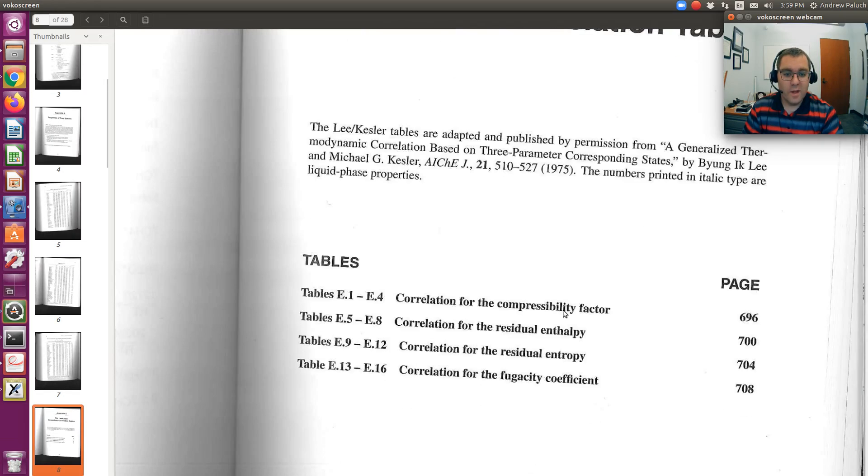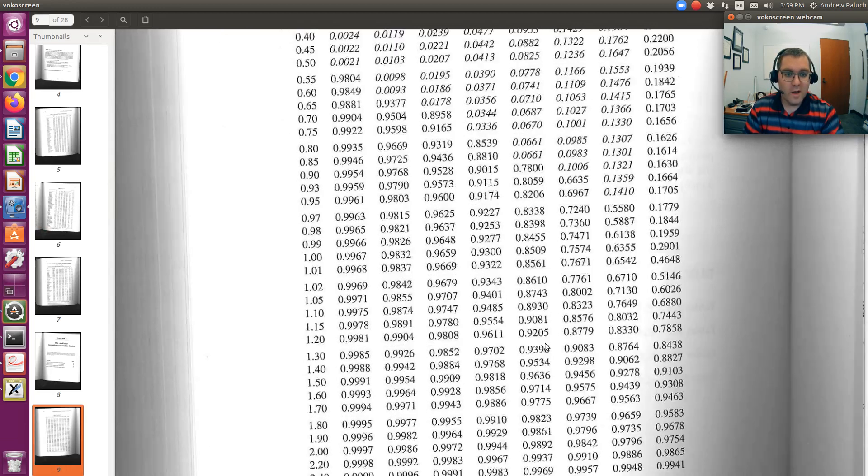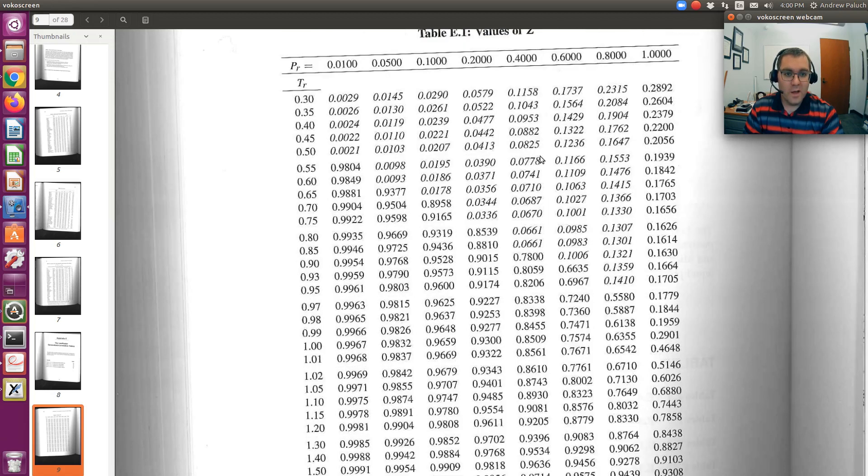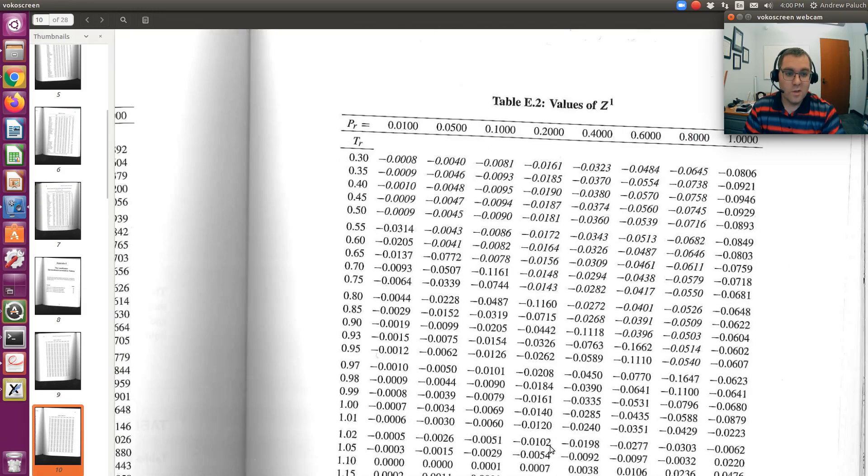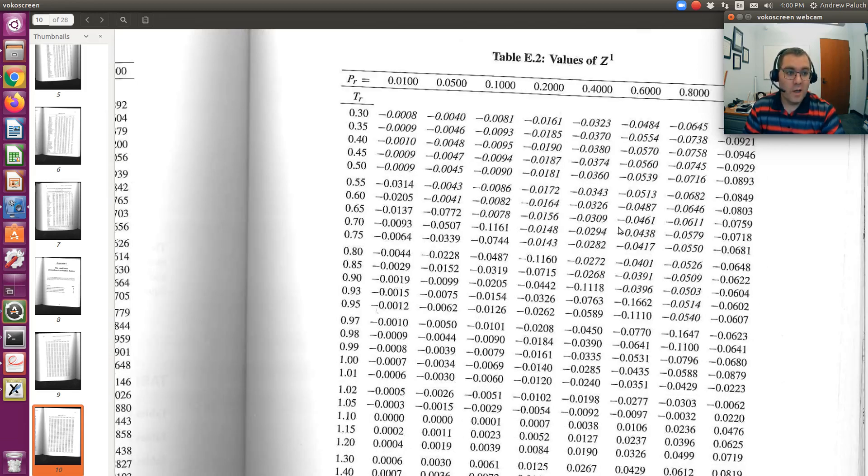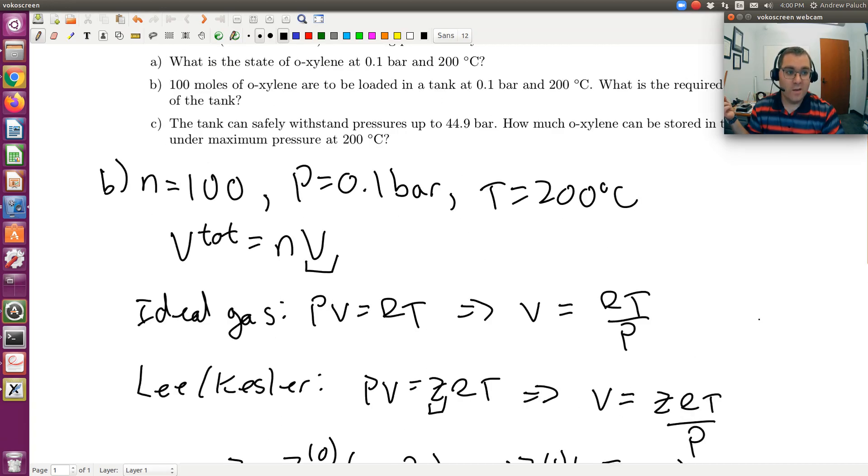Here would be the Lee Kessler tables. Once you calculate TR and PR, you would just find where you are in the table. If I had a reduced pressure of 0.4, and say a reduced temperature of 0.9, this would be my value for Z naught. It may be that you need to double interpolate on these tables. After you have Z naught, you'd go to the table for Z1 and find your value of Z1. Once you have that, then you can calculate Z. Once you have Z, you can use your equation of state for real fluids.